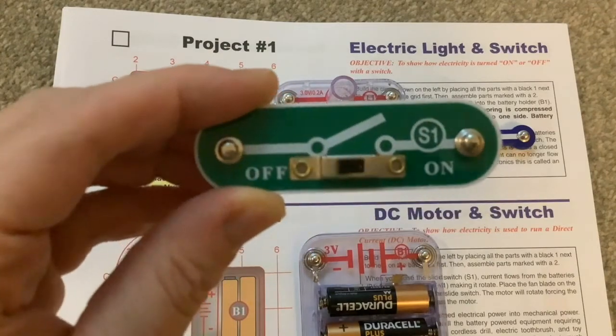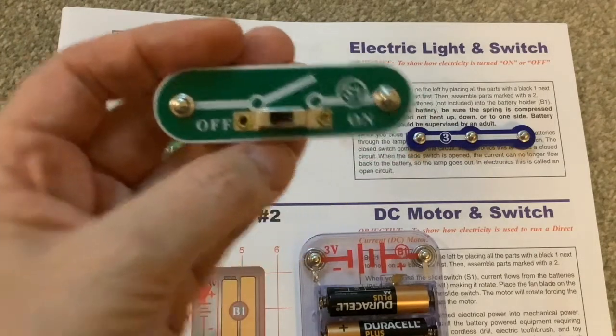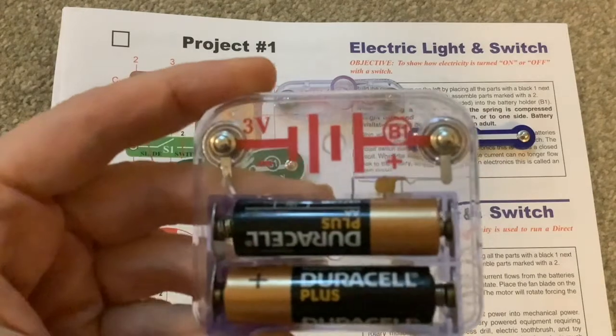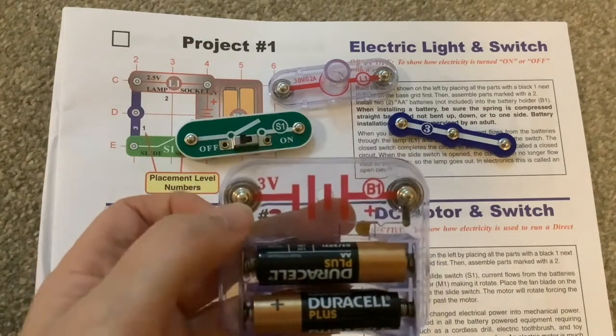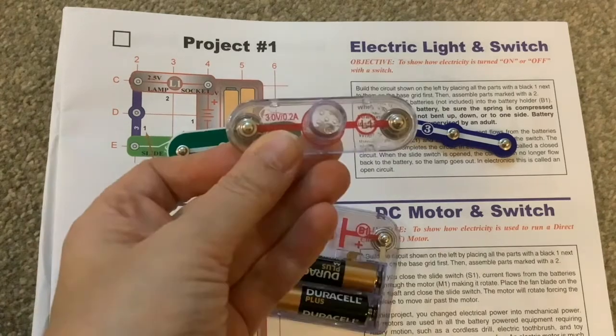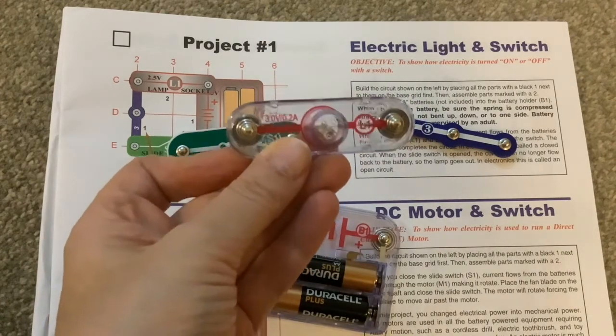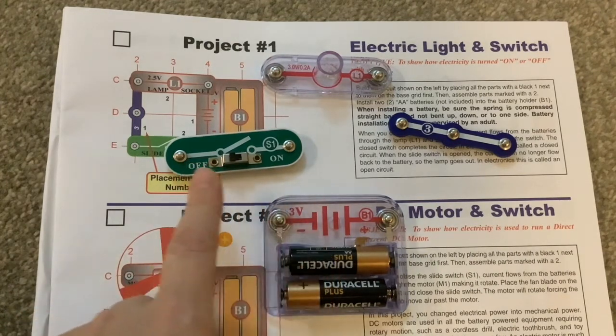You also have the symbols that you would see in circuit diagrams. Here we've got the proper symbol for a switch, the proper symbol for batteries. It also gives you the voltages—this is 3 volts because it's two AA batteries. It tells us that the lamp component is 3 volts. So it can be as simple as just following the numbers and letters and copying, or it can be making up your own circuits by following a circuit diagram and looking for the correct components.